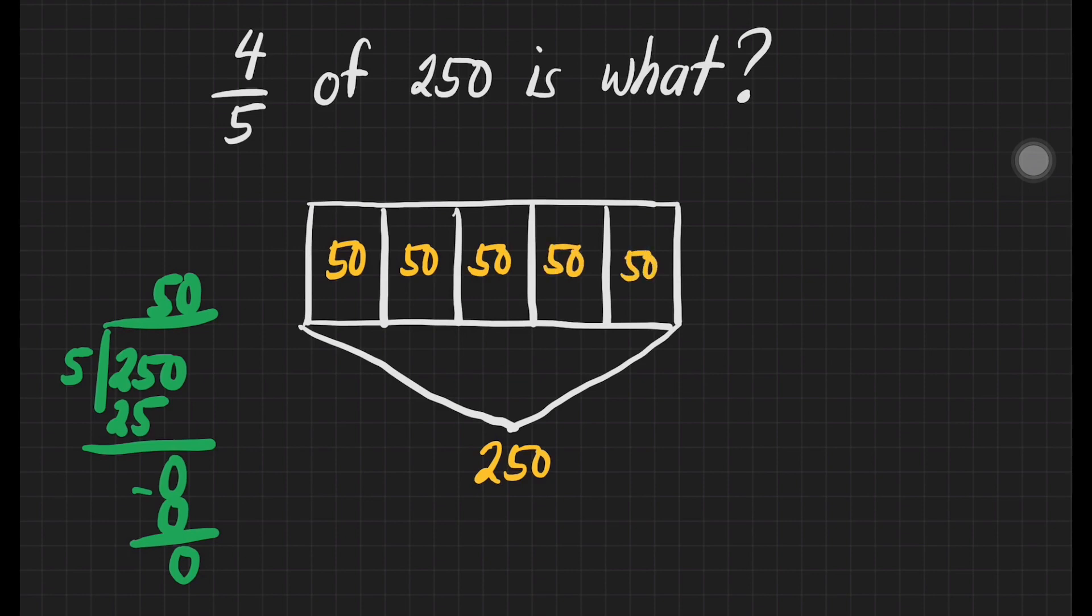Now, what is 4 fifths of 250? Based on this illustration, we can answer right away by just identifying which is the 4 fifths in here. This is our 4 fifths. 50 times 4 is equal to 200. So our answer here is 200.